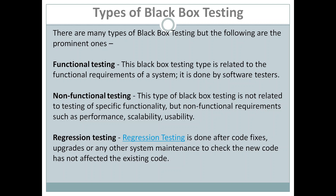There are different types of black box testing. Some prominent ones include functional testing, non-functional testing, and regression testing. Functional testing is related to the functional requirements of the system. It is used to check whether the system works as per the functional requirements given by the client or customer, and it is done by the software tester.